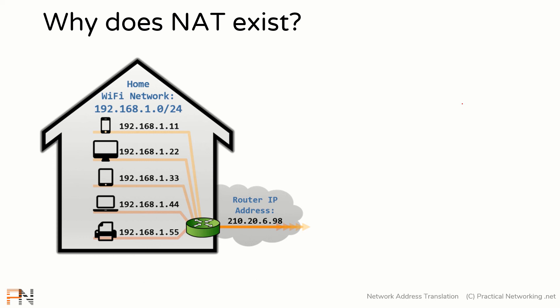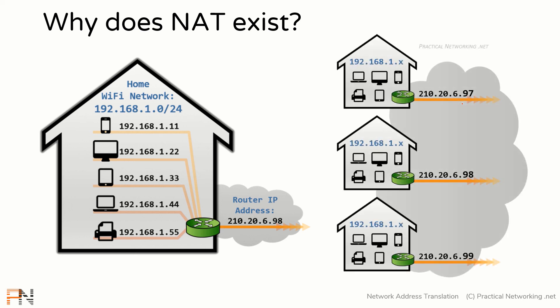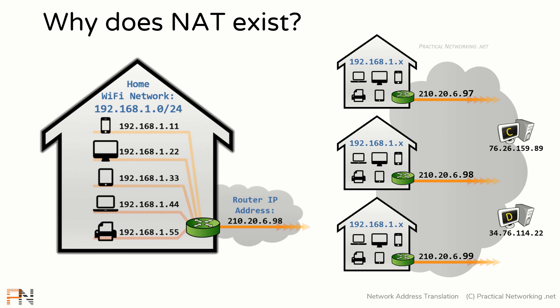But it actually goes a step further. This house likely exists in some neighborhood, and it's very likely that all the houses in that neighborhood use the same private IP address space for their internal Wi-Fi network. As long as each of these routers are translating those private addresses into unique public addresses, we will have no problem communicating with other devices on the internet.